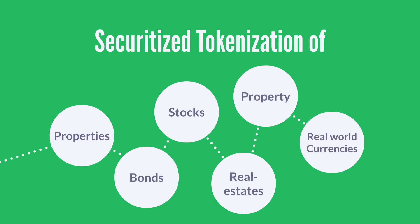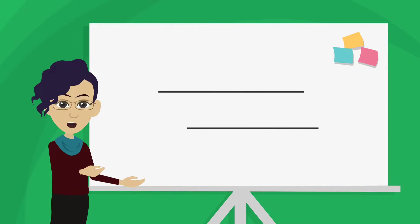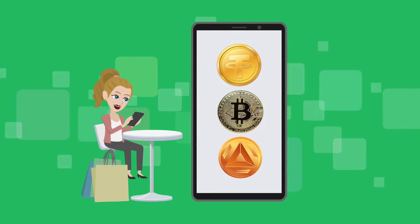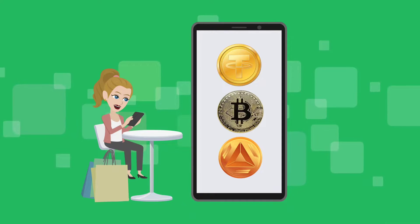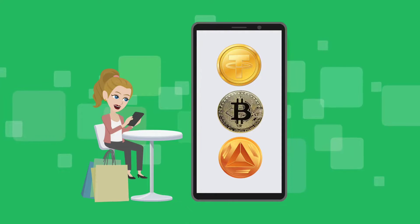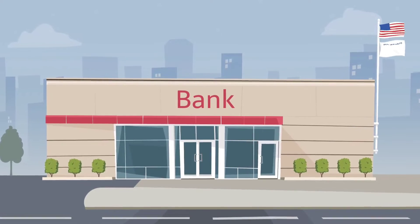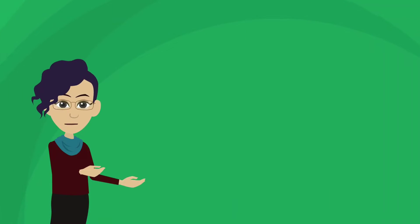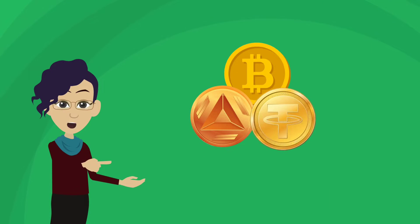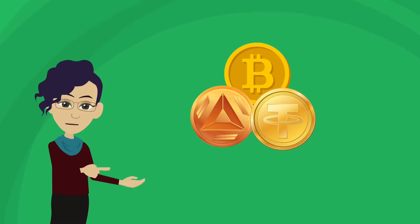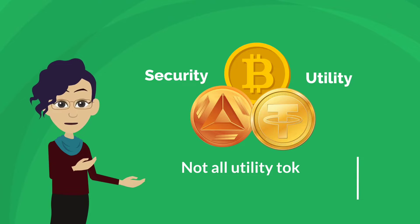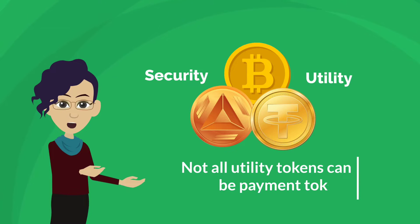Three: payment tokens. As the name suggests, payment tokens are those used for buying and selling goods and services on digital platforms without an intermediary, as happens in traditional finance and banking. The majority of cryptocurrencies and tokens fall into this category, whether they are security or utility tokens. However, not all utility tokens can be payment tokens.